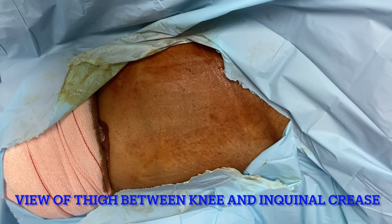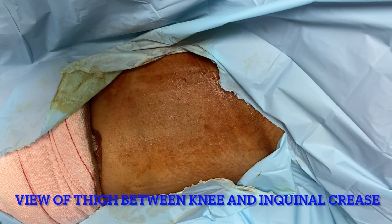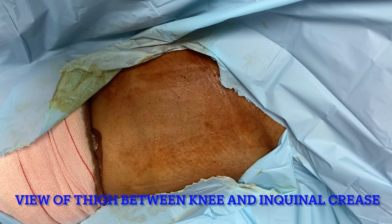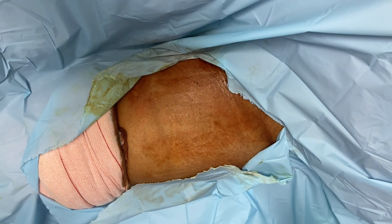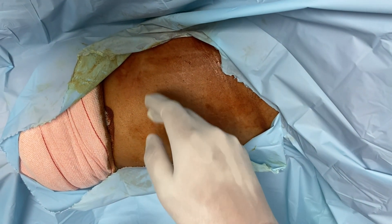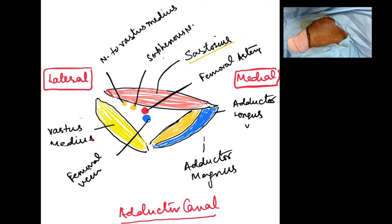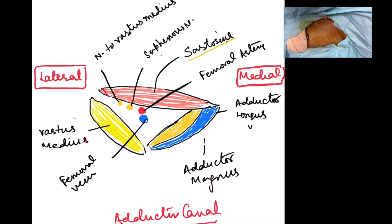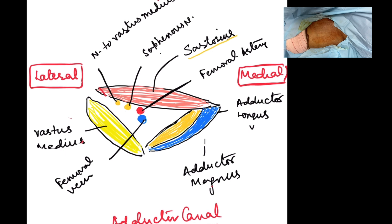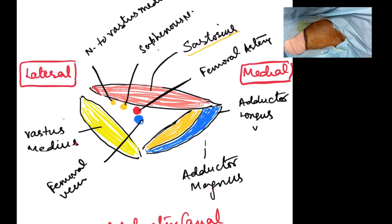In this video I am going to talk about the adductor canal block and how we can perform the ultrasound-guided adductor canal block. The adductor canal is basically a triangular structure that lies on the medial aspect of the thigh. The roof is formed by the sartorius muscle, the medial border is formed by the adductor magnus and adductor longus muscles, and the lateral border is formed by the vastus medialis muscle.